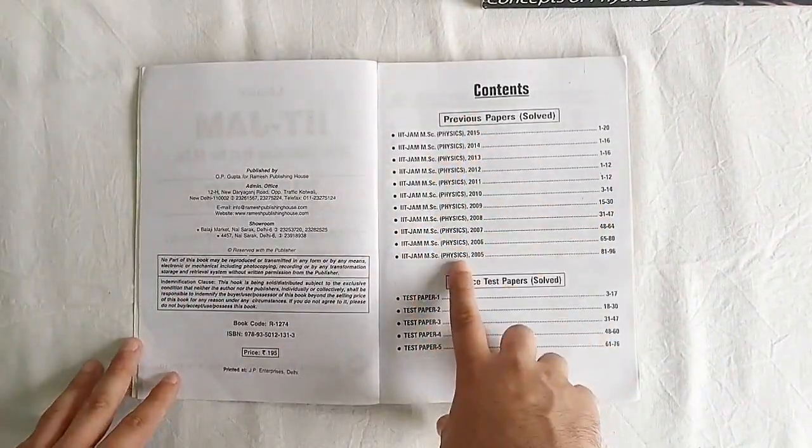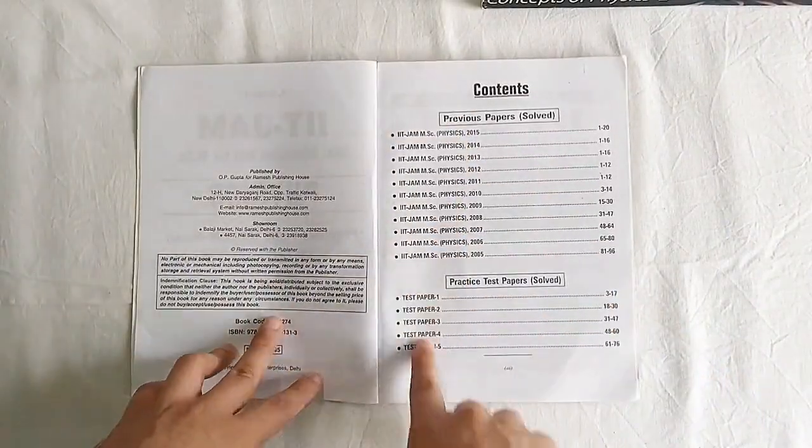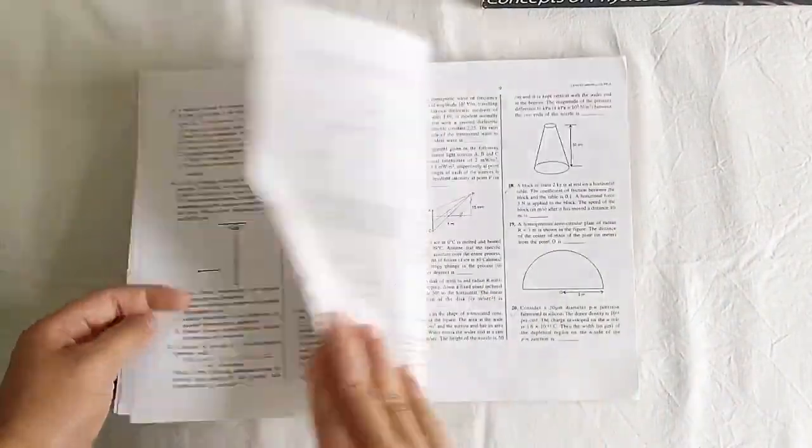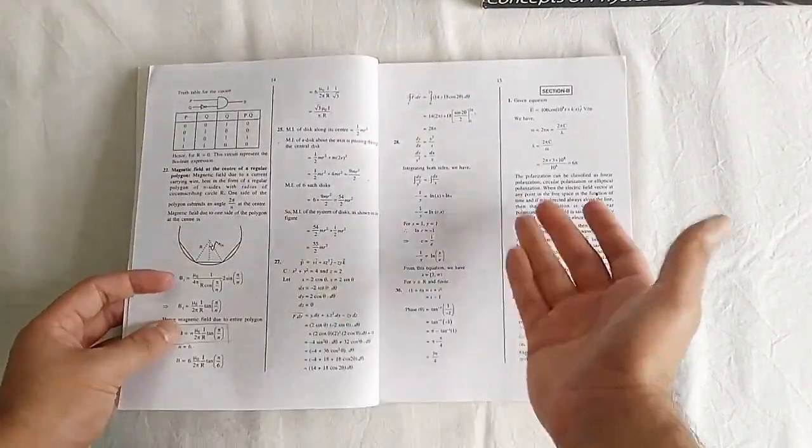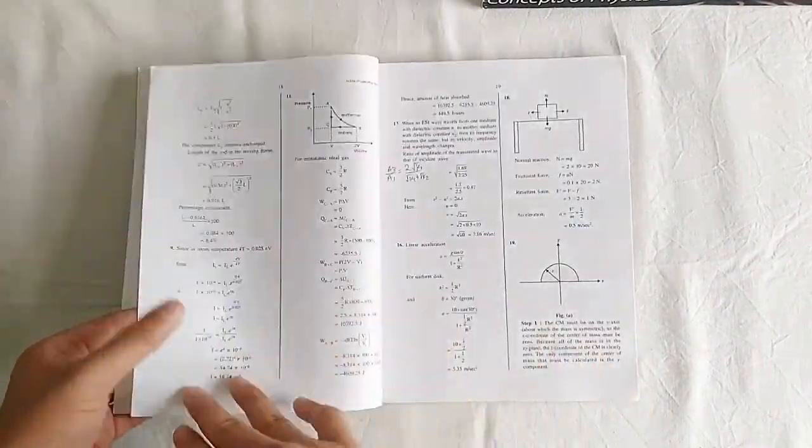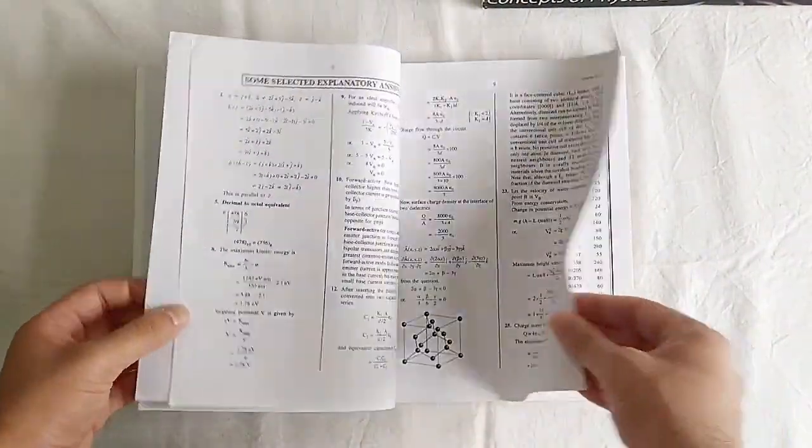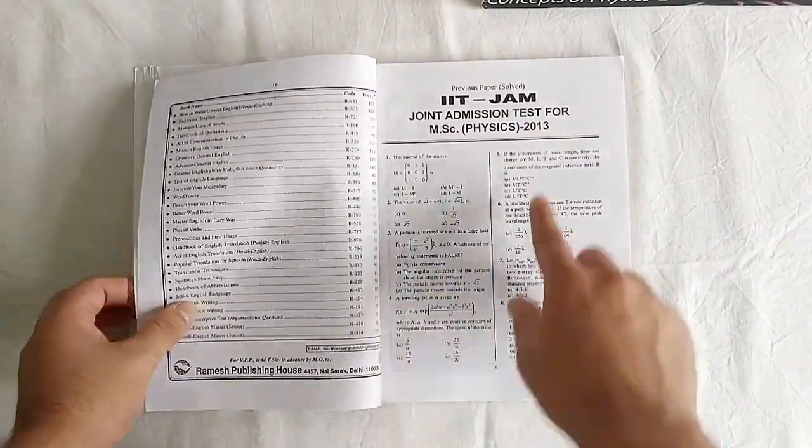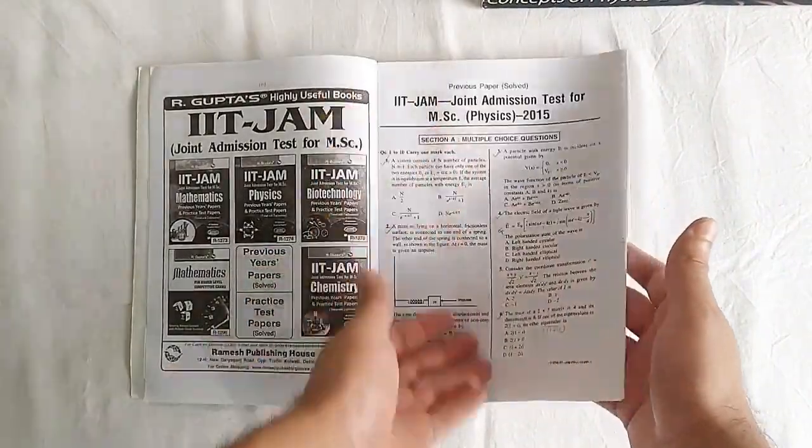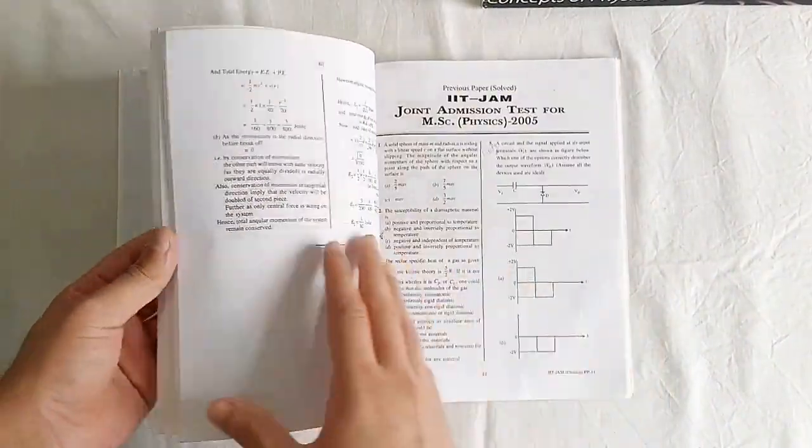And I bought this so that I could see how the JAM questions are and get an idea about the exam. So they have previous questions and test papers. As you can see, I had solved this 2015 paper. They also have answers if you don't know how to solve. So you also end up learning and find out which are the areas you need to focus on for this particular exam. As you can see, I have not solved this 2014. Not even 2013. So I just solved 2015 paper.